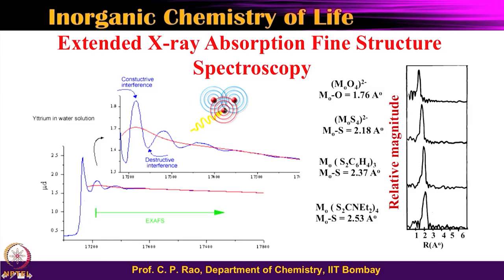Let us look at the principle. Take the metal center with some ligands attached — the primary coordination centers. When you incident X-radiation, the X-rays can knock out even the core electrons; the electron is knocked out and moves out. This outgoing electron wave then starts interacting with the electron cloud of the neighboring atoms, which are the ligating centers. Therefore, the electron wave coming out interacts with the electron cloud of the neighboring atoms.